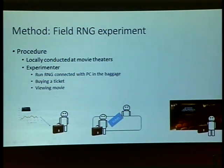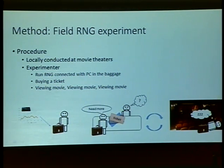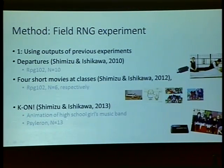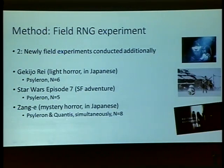We conducted a movie theater experiment — an experimental RNG unit connected with a PC in the baggage, buying a ticket, and viewing a movie. Our previous dataset used the movie Departures, which is a sad movie, four short movies at classes, and Japanese animation movies. Newly conducted field experiments additionally included horror movies, Star Wars, and a mystery horror film.